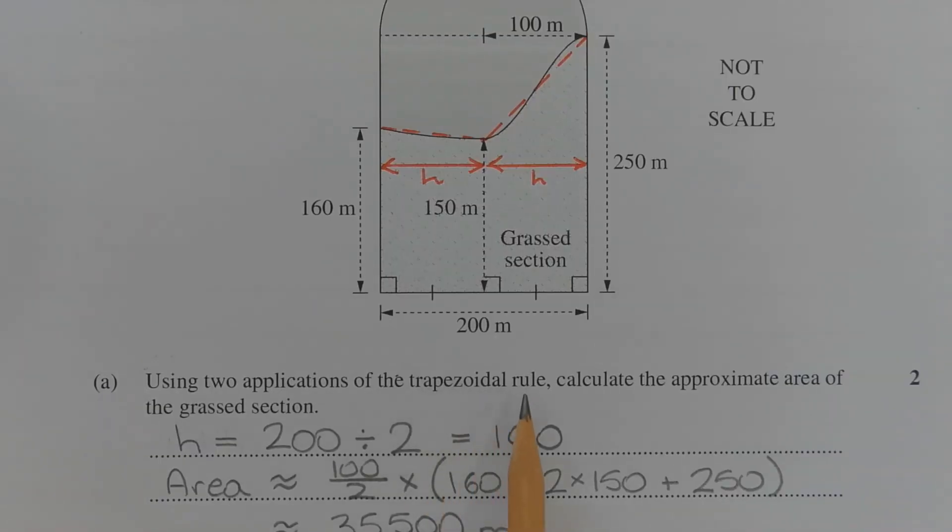Before the trapezoidal rule is applied, we need to find the value of h, which is the distance between each pair of parallel sides in each trapezium. This can be worked out in one of two ways. Either we take 200 divided by 2 to get 100 metres, or we could read it off the radius of the lake since this distance here is equal to this distance here.